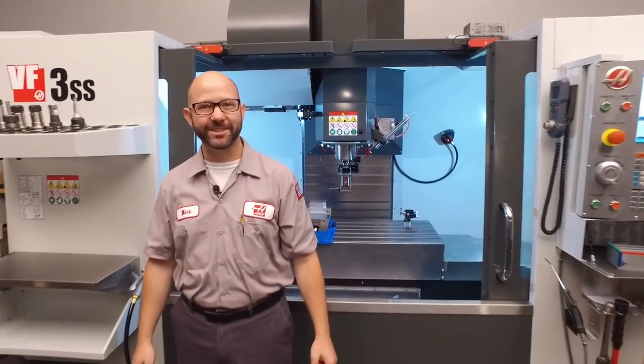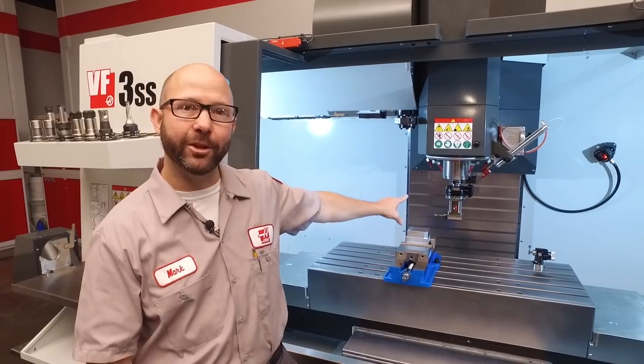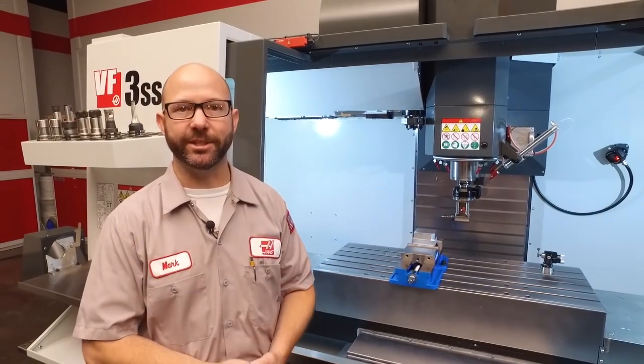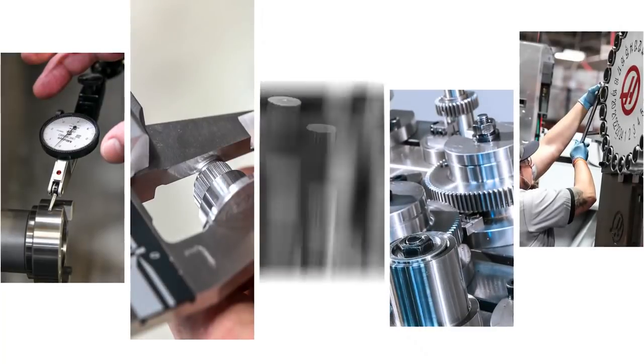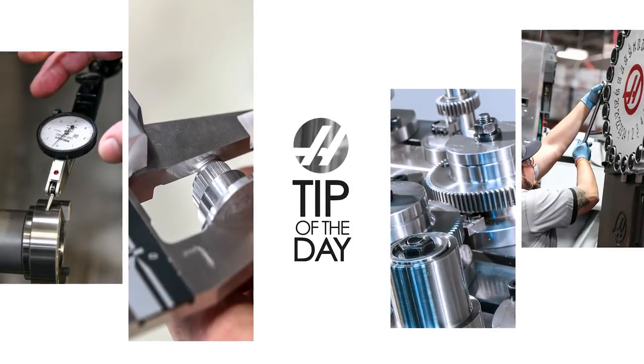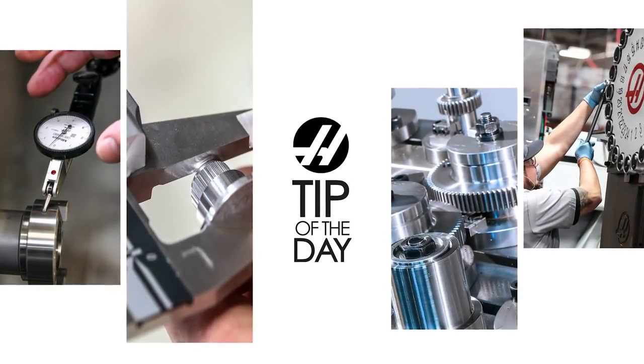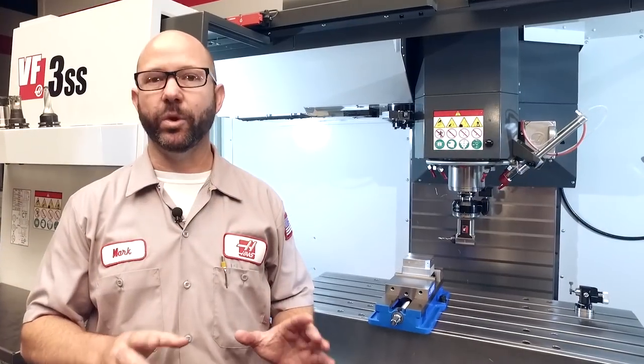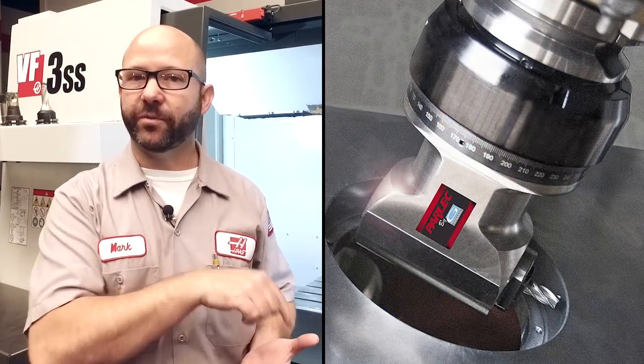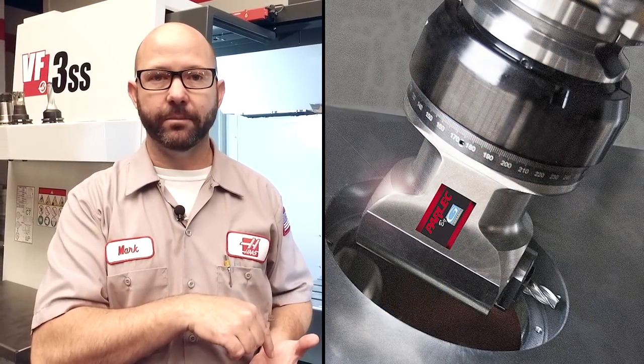Hello and welcome to another Haas Tip of the Day. Right now we're going to talk all about using an angled head on your Haas mill to drill and tap. Now this is a fun topic. We use right angled heads to reach features that can't be machined in any other way, and we also use them to save on operations.